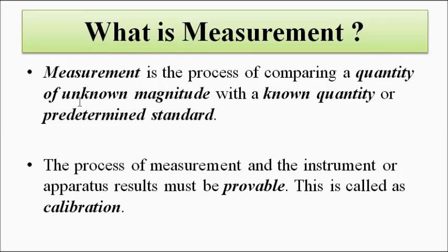This process of comparison of the unknown magnitude with the known must have its results proven correct. That process is called calibration. The simple definition of calibration is that for a particular input to an instrument, the output must be fixed — so that when you apply the same input, the output will remain constant. That process is called calibration, and there is more to it.